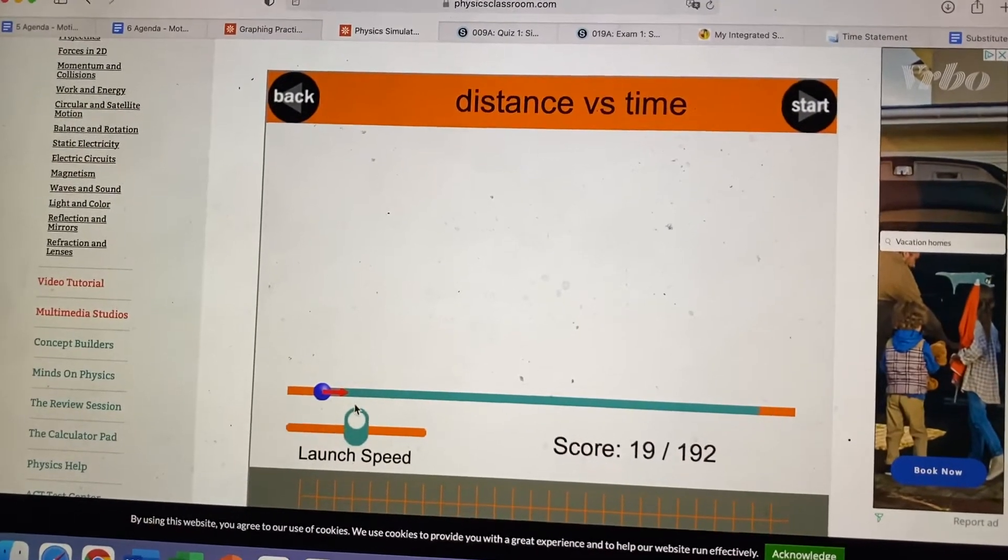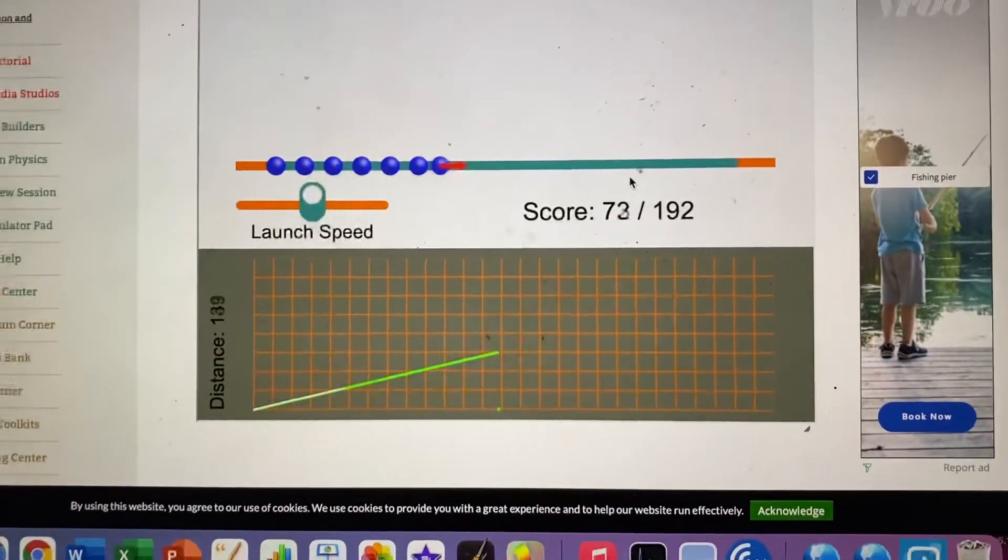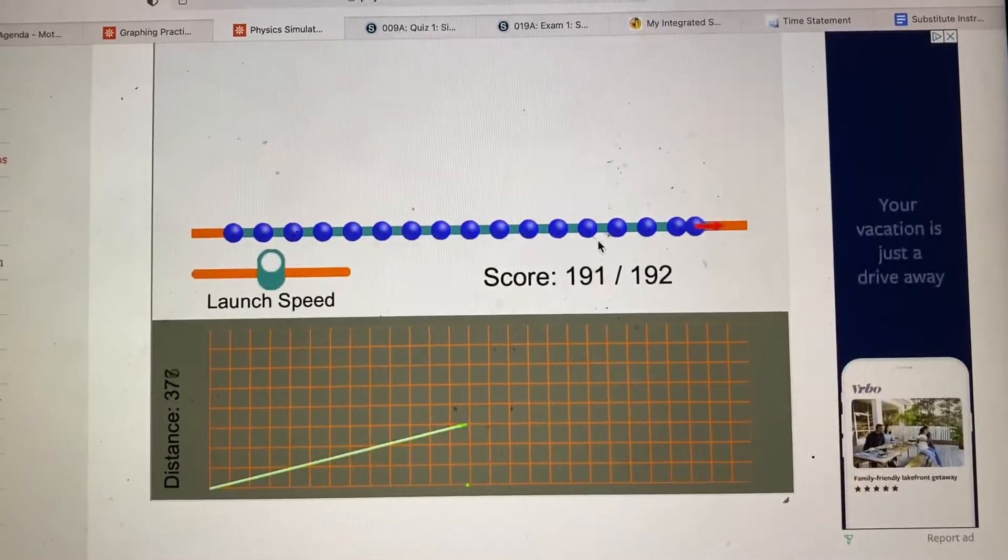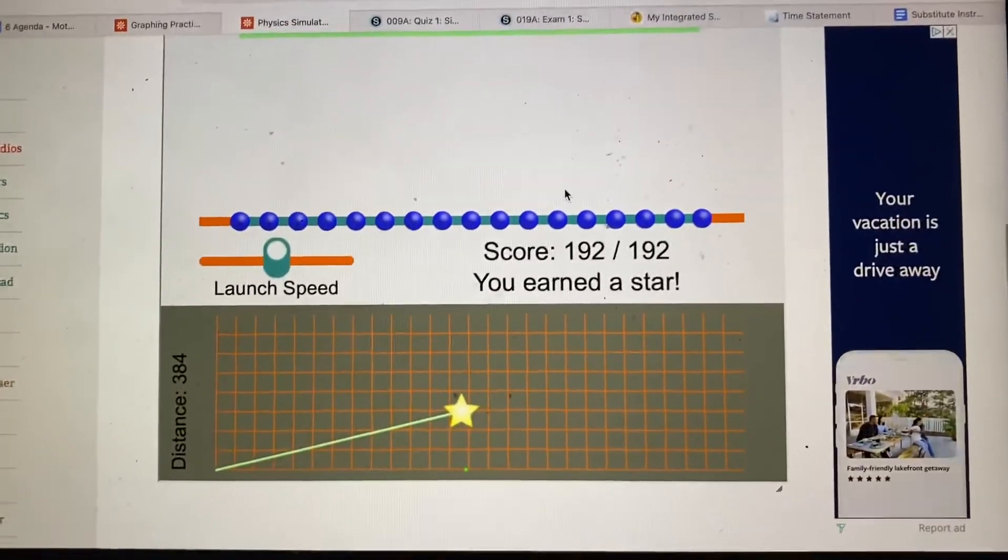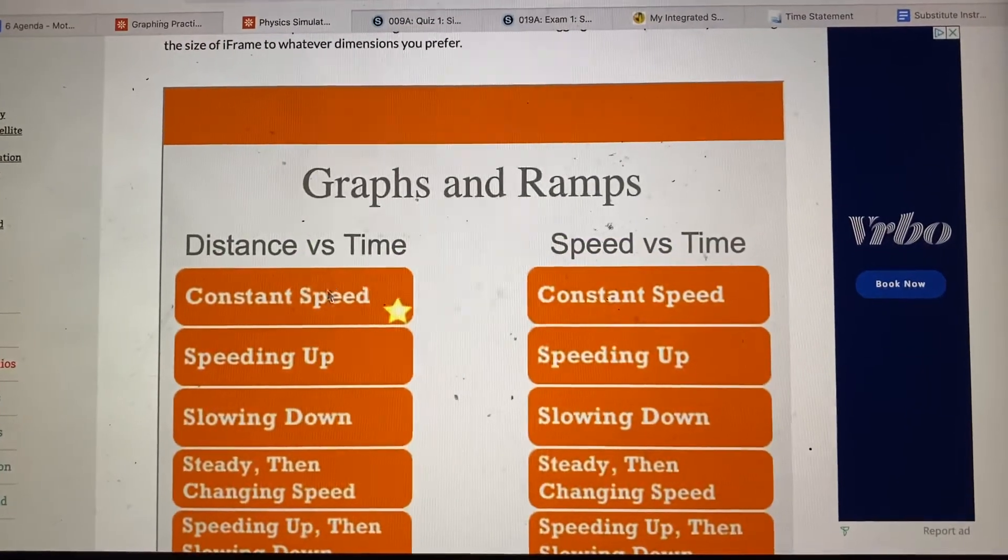Faster, right? So let's maybe go a little faster. And that would give us a steeper slope, all right? Ta-da! Look at that. Boom. Okay, I earned a star. That means I got it right. And so now I'll go back. I got a star there.